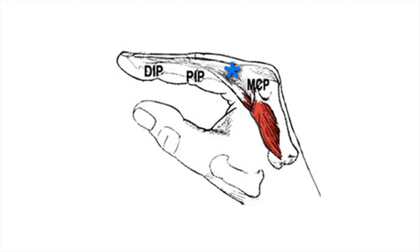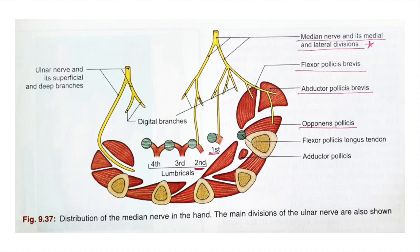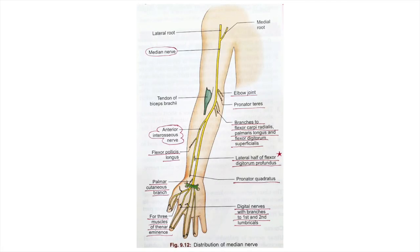These 12 intrinsic muscles are flexors of the metacarpophalangeal joints and extensors of the IP joints. Out of these 12 muscles, 10 are innervated by the ulnar nerve, while the first and second lumbricals are innervated by the median nerve.